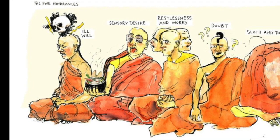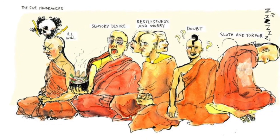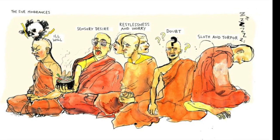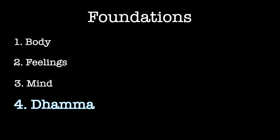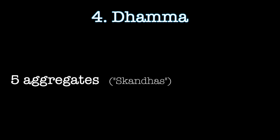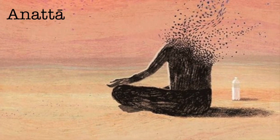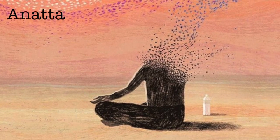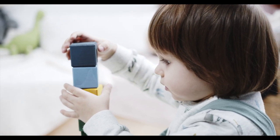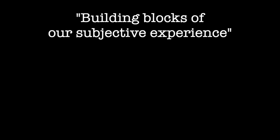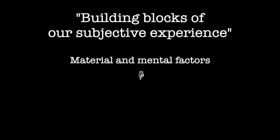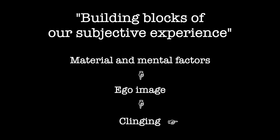Last time we looked at how the five hindrances keep us stuck in our practice and in our lives, and we explored different ways of relating and working with them in order to free ourselves from their grip. The next dhamma, or universal category of phenomena, in this fourth foundation of mindfulness is the teaching on the five aggregates, or skandhas. This teaching goes to the core insight of the Buddha. It provides a framework for investigating how we create and maintain our self-image, which is at the root of our suffering. Simply put, the five aggregates represent the basic building blocks of our entire subjective experience — the material and mental factors that make up our sense of self. When we cling to these factors, we reinforce the identification which leads to resistance and suffering. This is why they're known as the five aggregates of clinging.